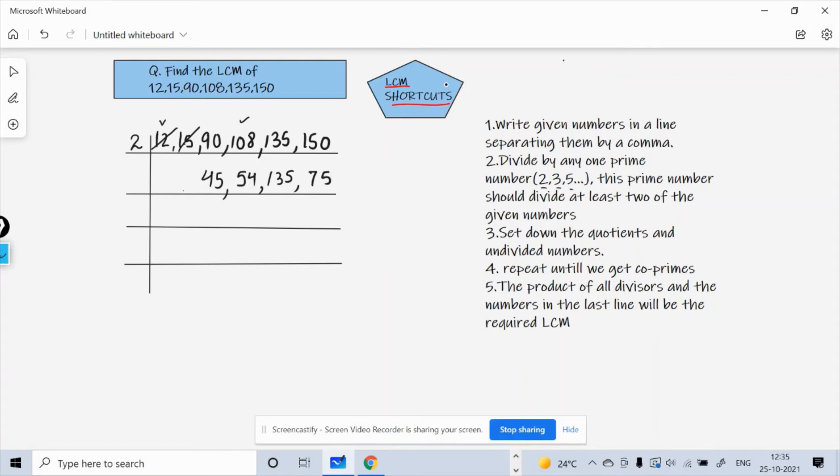Now at each step you try to find out, do you have any such number which is a factor of another number? So when I look at it, I can see that yes, 45 is a factor of 135, as 45 into 3 is 135. So that means I can cancel this straight away here, and this gets easier, isn't it?